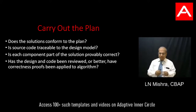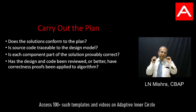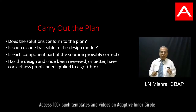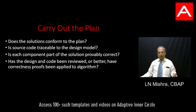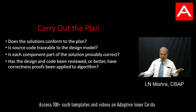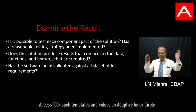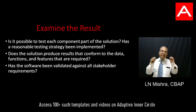Then we need to carry out the plan. We have understood the problem, we have created a plan — now we execute it. In the execution stage we are writing programs and designing architecture. In the software world we call this design and code. Design is to create a blueprint, and code is to actually write the instructions which the computer can understand.